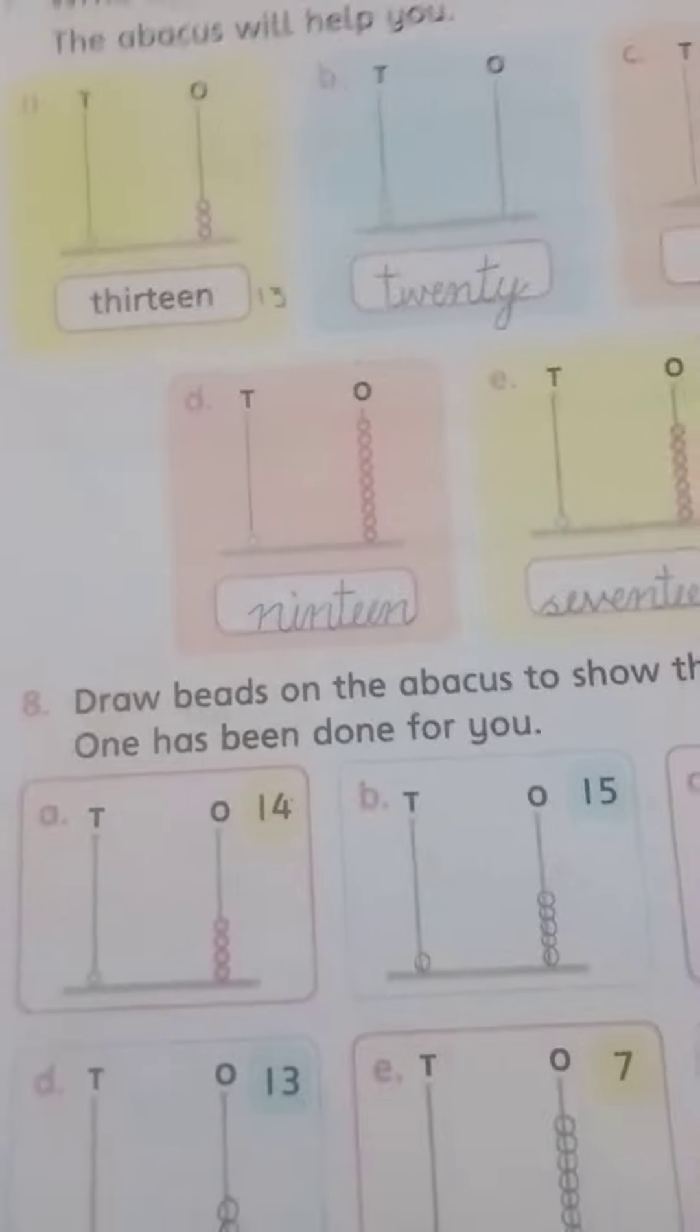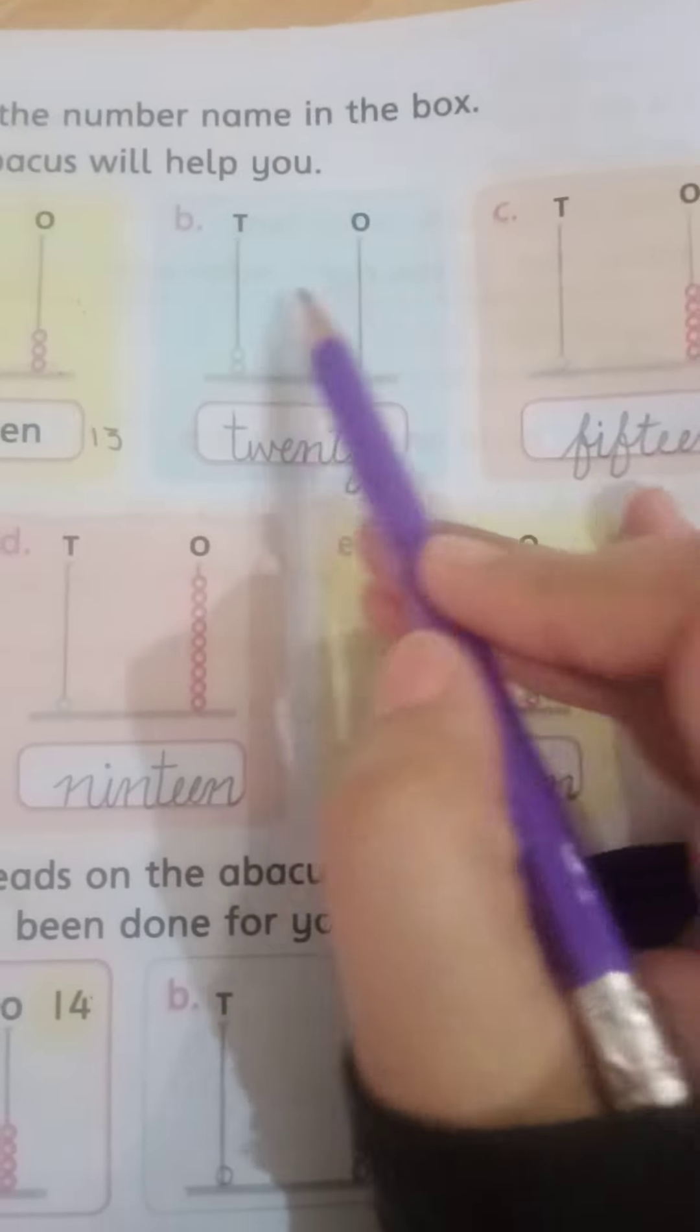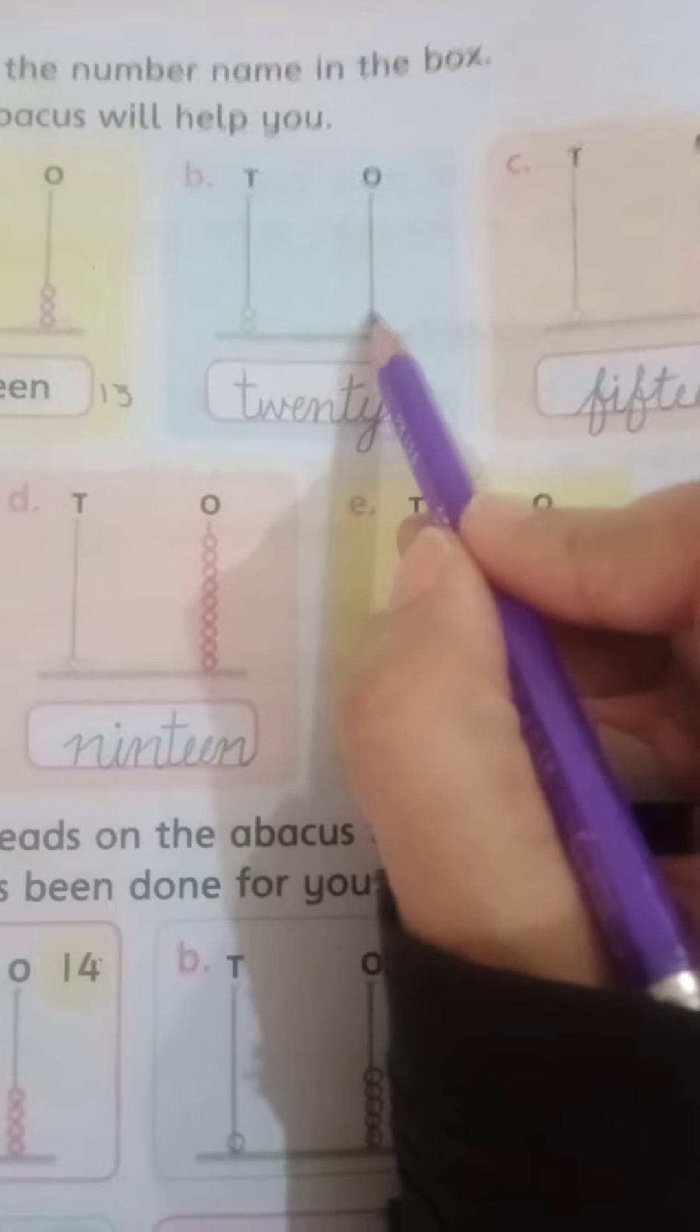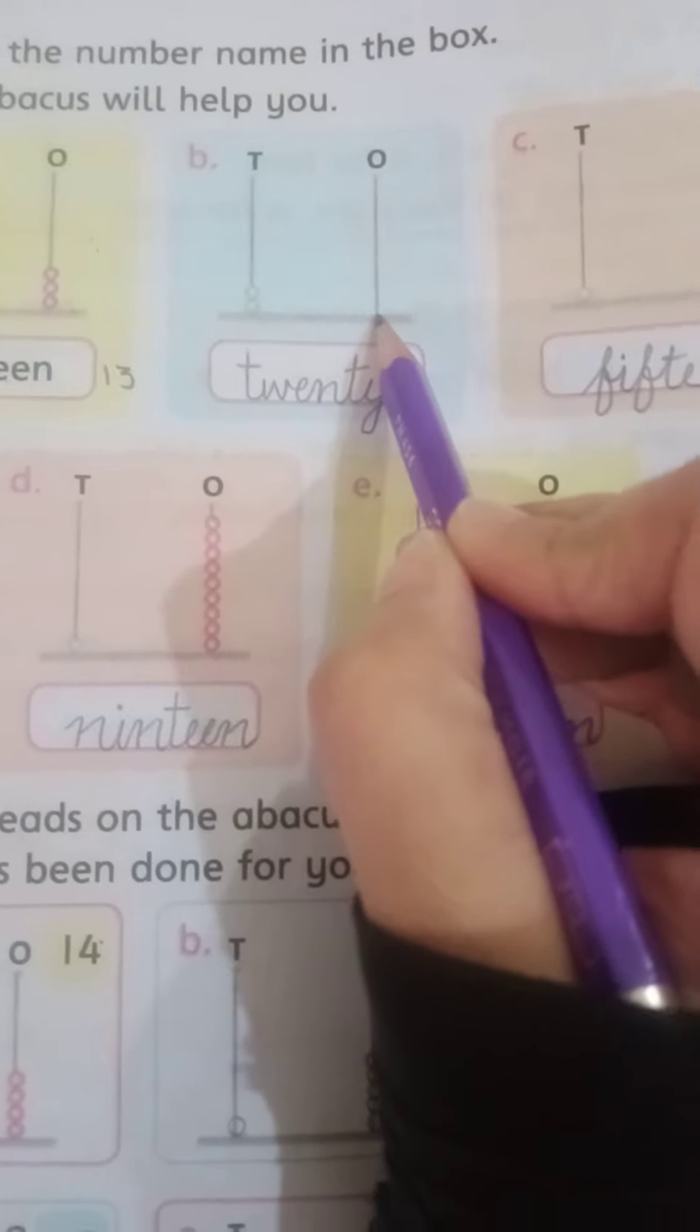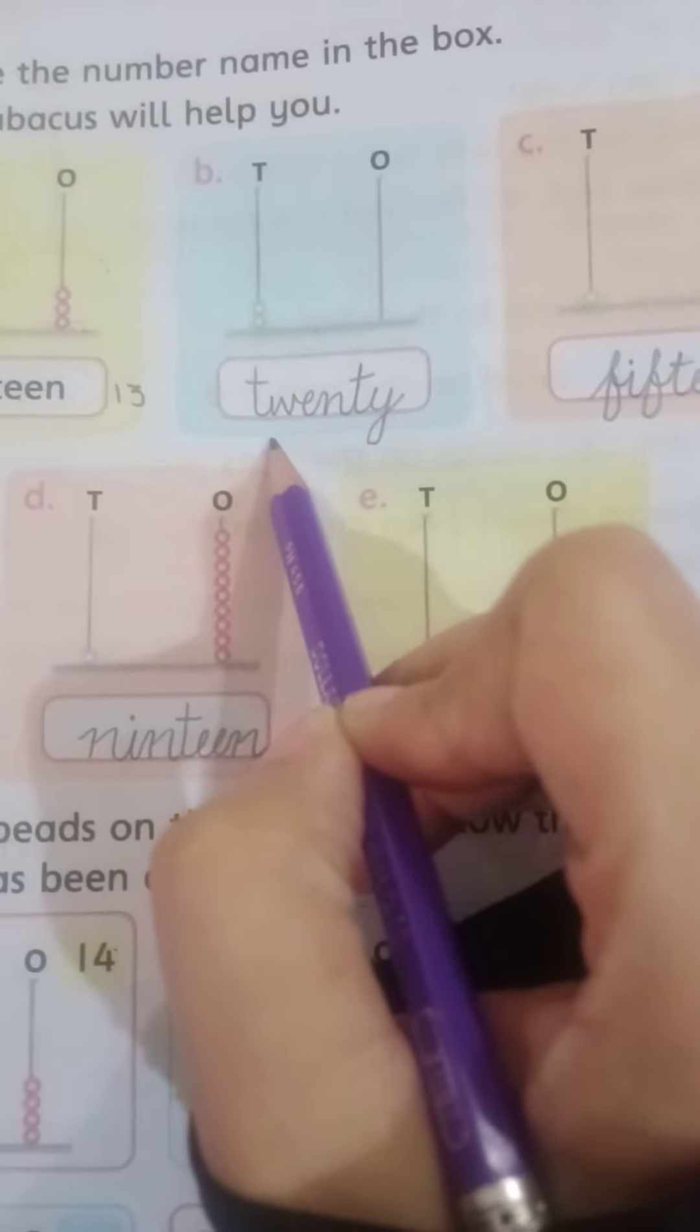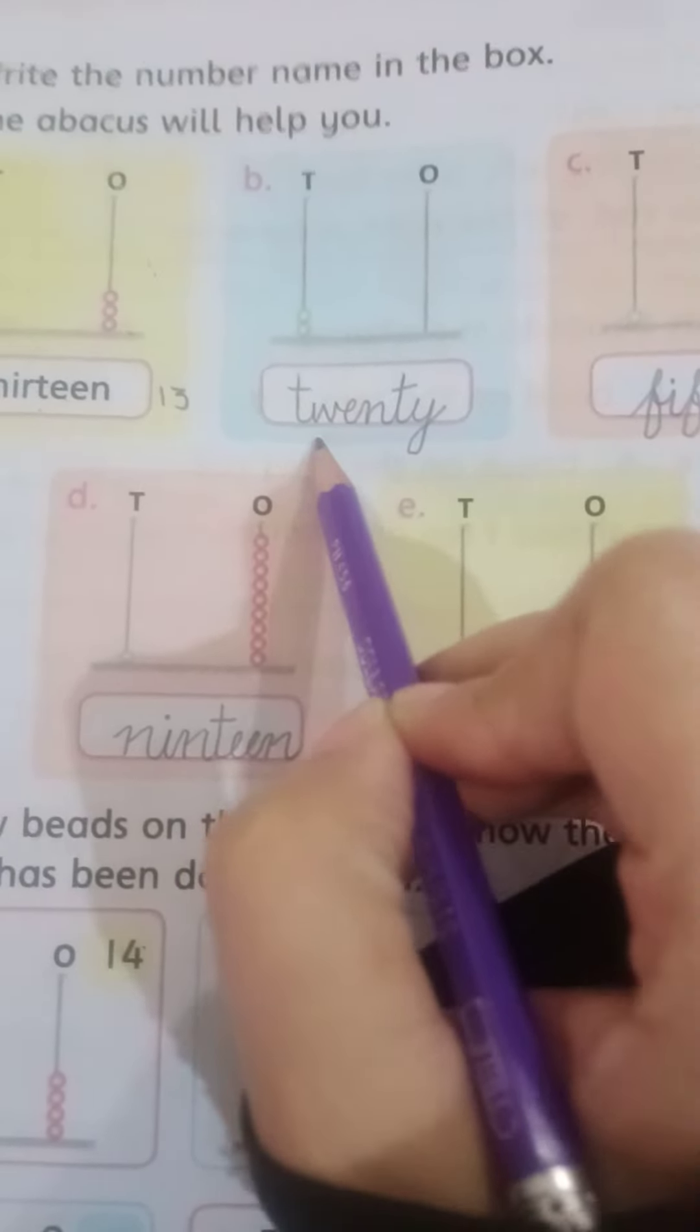Toh aapne isko inverse mein right pe karna hai, ones mein or tens mein. Students, yahan pe circles banaye hue hain, jahan pe koi circle nahi hai, uska meaning hai zero. Jahan pe circles banaye hue hain, uske mutabik aapne yahan pe inverse mein number likhna hai.